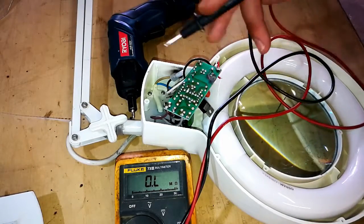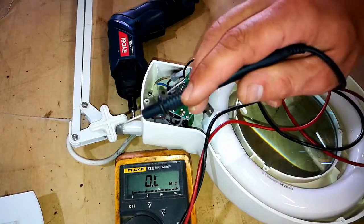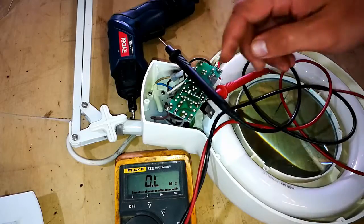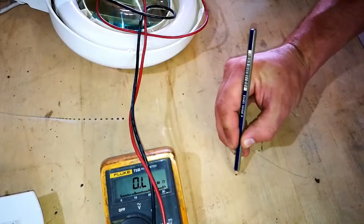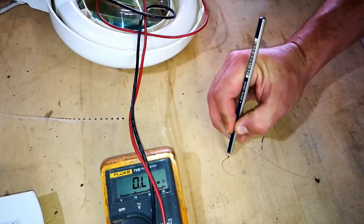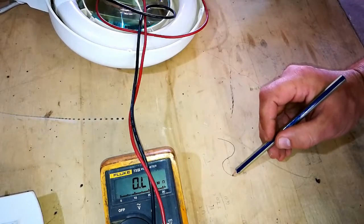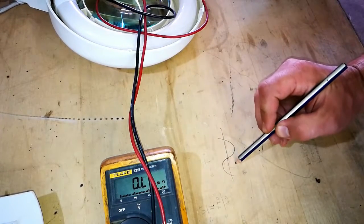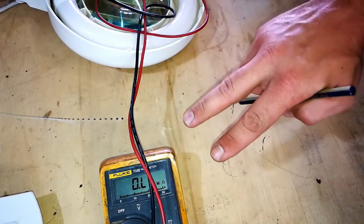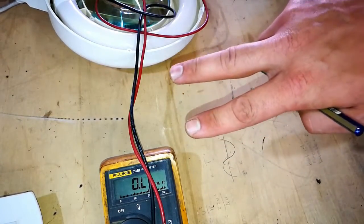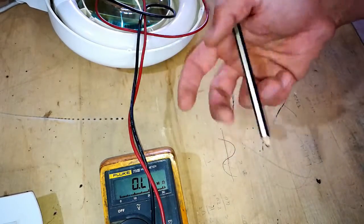What I'm going to check now is if this big yellow cap is across the bridge. So that is just to smooth out the ripple because when you go from AC, the sine wave... Let me just see if I can draw you. When you've got AC, it looks like this.